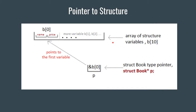Just like we have pointers to normal variables or arrays, we can also have pointers to structures. For example, if you have a structure array where the structure variable is b and you declare 10 such variables, then b[0] refers to the first group of member variables, b[1] to the next, and so on up to b[9]. If you declare a pointer as 'struct book *p', it will point to the first location, that is b[0]. We'll see this again using code.